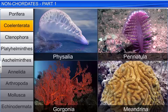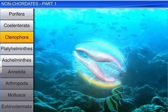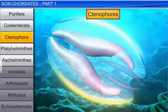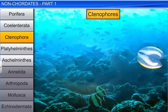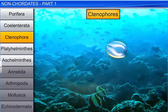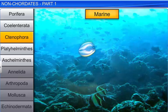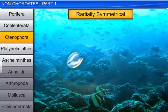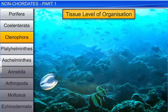The next phylum is Ctenophora. Ctenophores are commonly known as sea walnuts or comb jellies. These animals are marine, radially symmetrical, diploblastic, with a tissue level of organization.